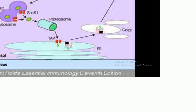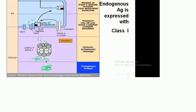For cross-presentation of exogenous antigen, the bacteria are taken up by phagocytosis, bind with the lysosome, are transported to the proteasome, processed into small peptides, then bind to MHC class I and are expressed on the cell surface. For endogenous antigenic peptides like tumor cells, the endogenous antigen is processed into small peptide fragments by the proteasome. MHC class I is synthesized, binds with the peptide, and is expressed on the cell surface.